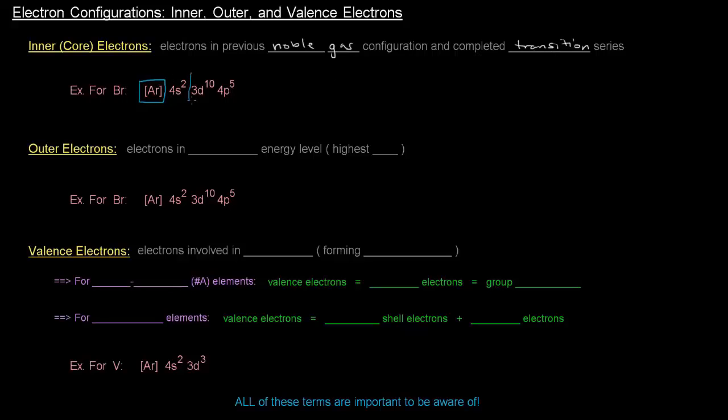So all those electrons and these 3d10 electrons, those are all the inner or core electrons in the example of bromine. So that's just the definition there.